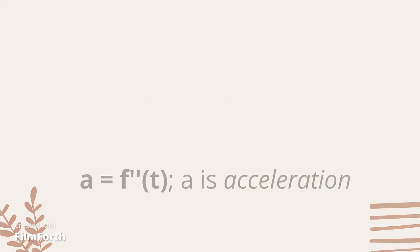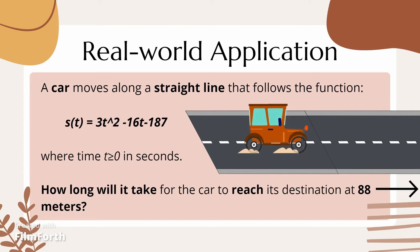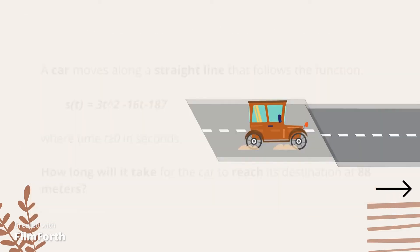The first example of the real-world application of derivatives is this. A car moves along a straight line that follows the function s equals 3t squared minus 16t minus 107, where time or t is greater than or equal to zero in seconds. The question is: how long will it take for the car to reach its destination at 88 meters?